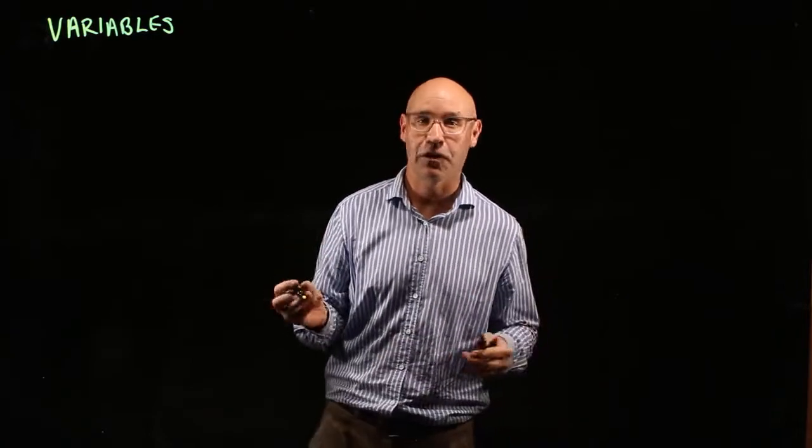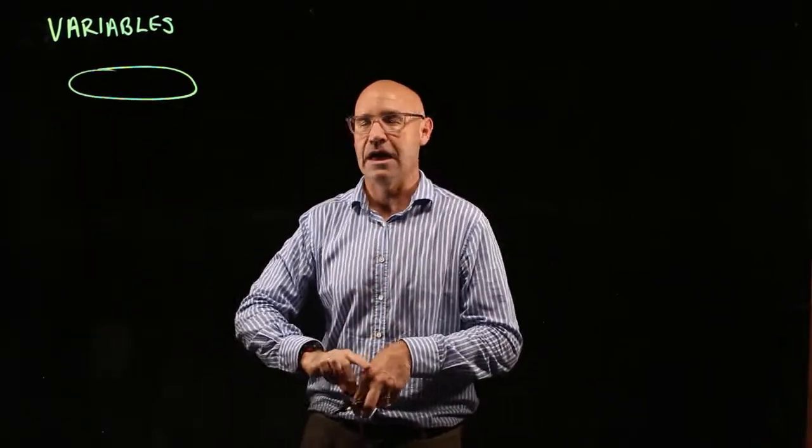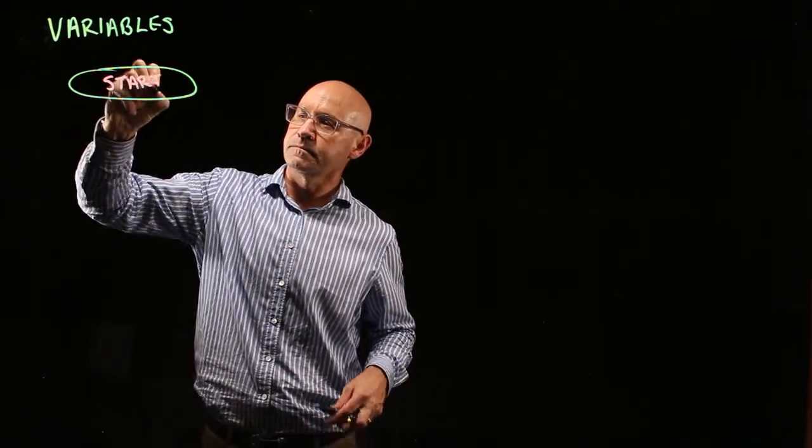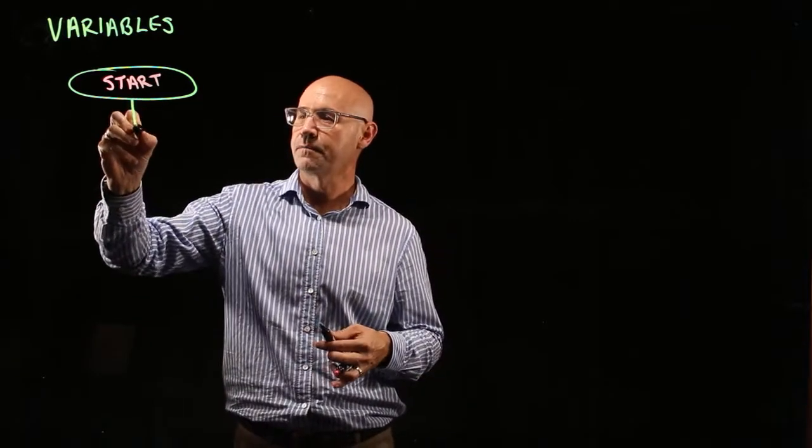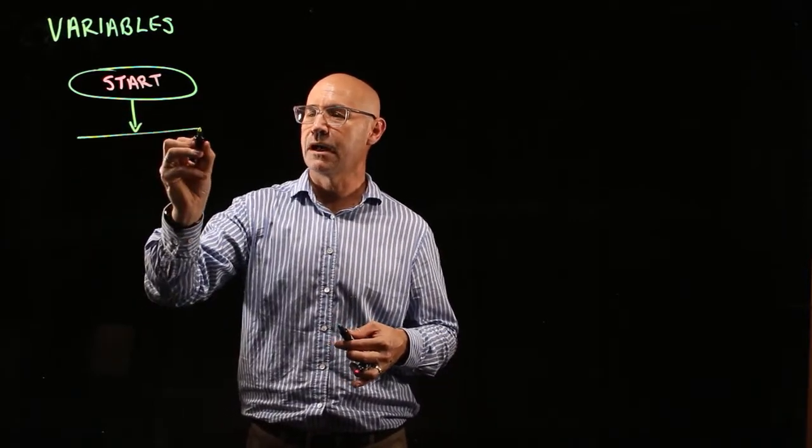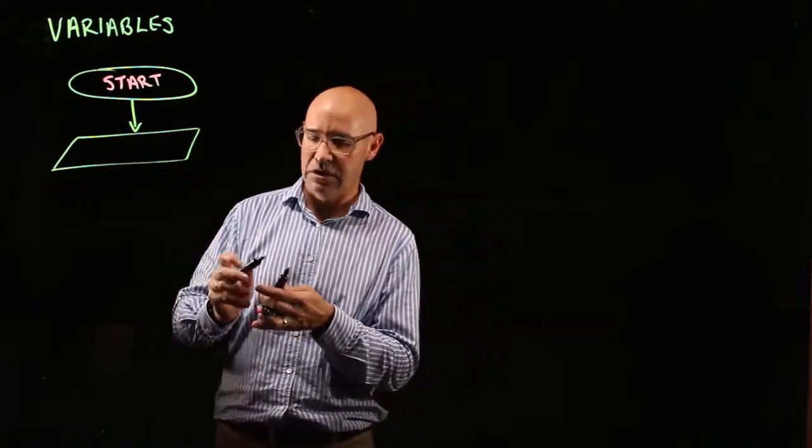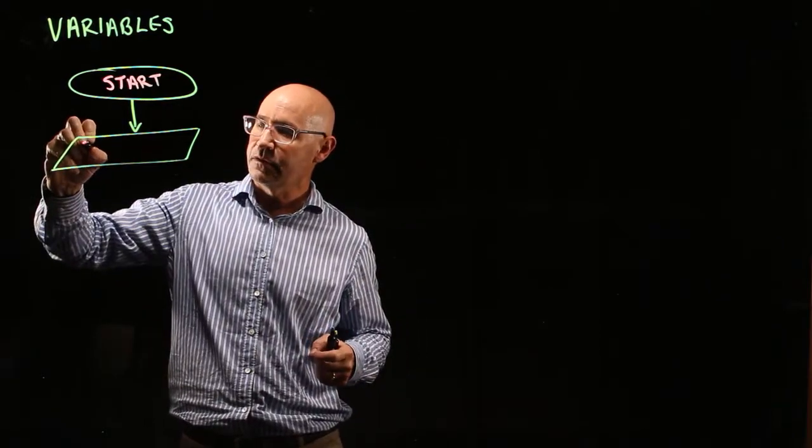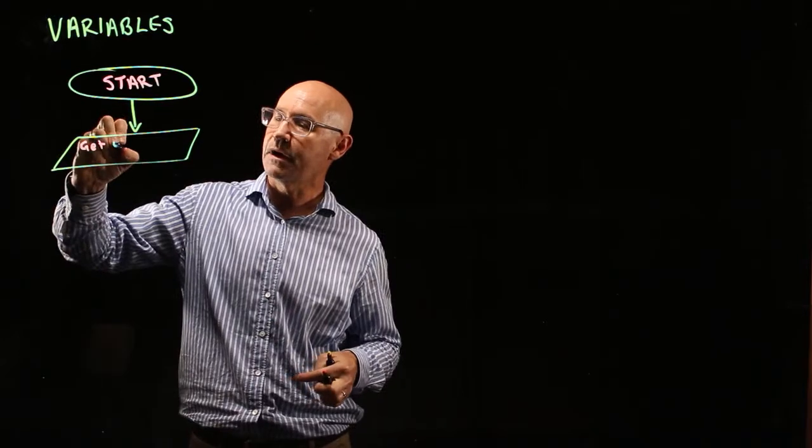Let's see if we can write that as a flowchart. Firstly, we need to start with our start terminator. Then we need to get some information from our user about what number they want us to stop counting at. So that's going to be a variable, that number. Get user number.